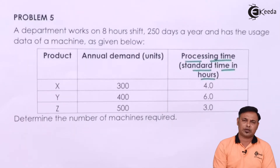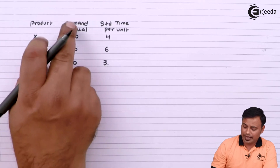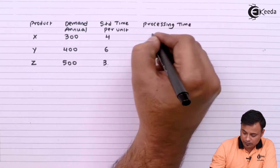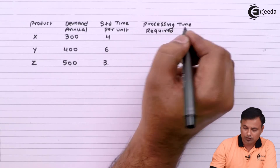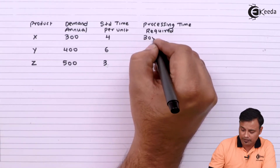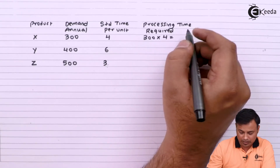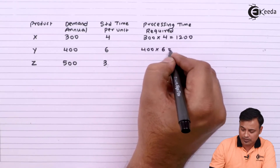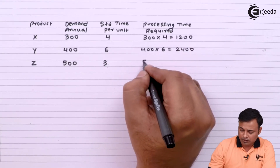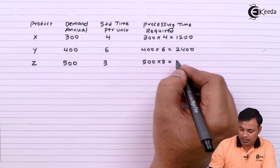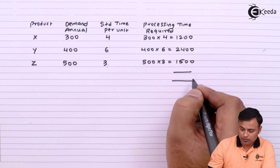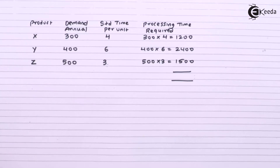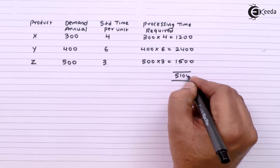I will multiply the annual demand by the standard time to get the processing time required for each product. For product X: 300 units × 4 hours per unit = 1200 hours. For product Y: 400 units × 6 hours per unit = 2400 hours. For product Z: 500 units × 3 hours = 1500 hours. So my total time will be 1200 + 2400 + 1500, which comes to 5100 hours.